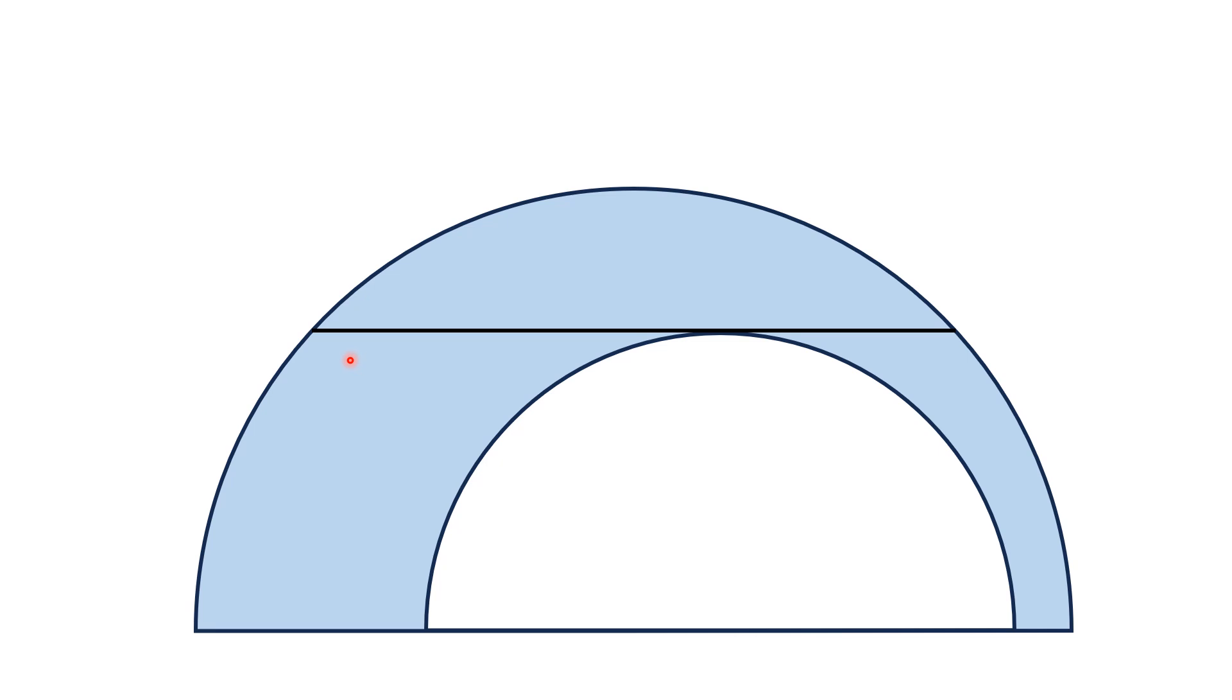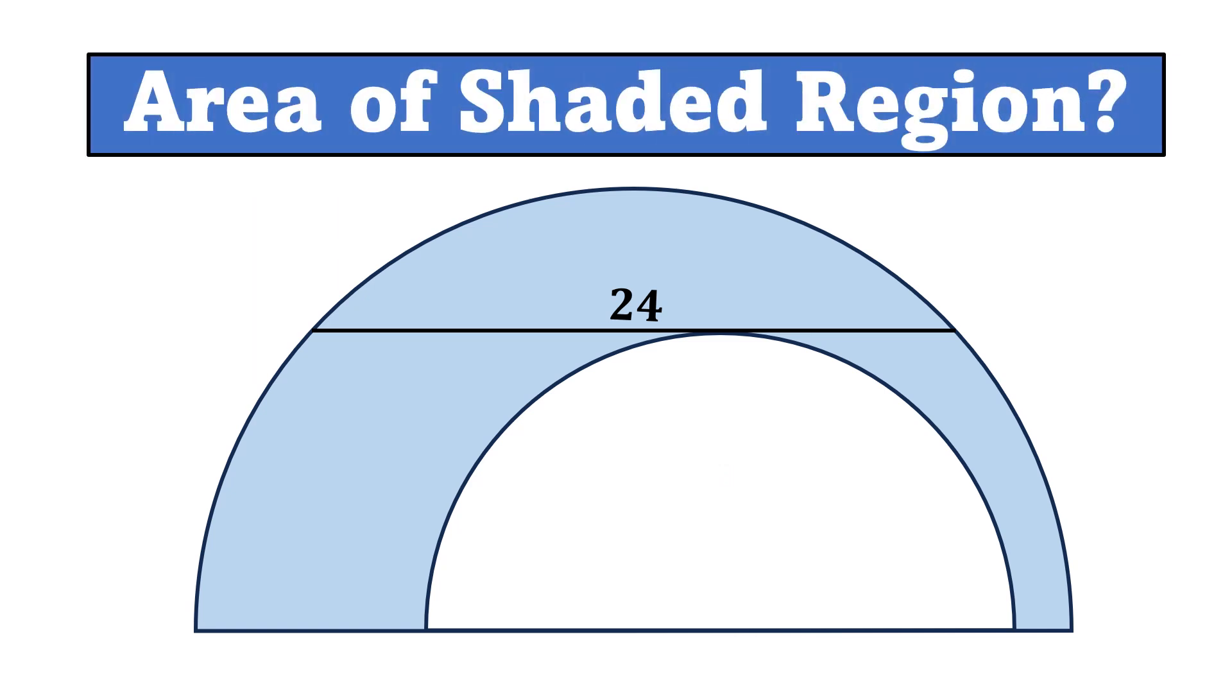This line segment is a chord to the semicircle with larger radius and is tangent to the semicircle with smaller radius, or the inner semicircle. If the length of this line, which is both chord and tangent, is 24, then using this limited data we have to find the area of the shaded region.